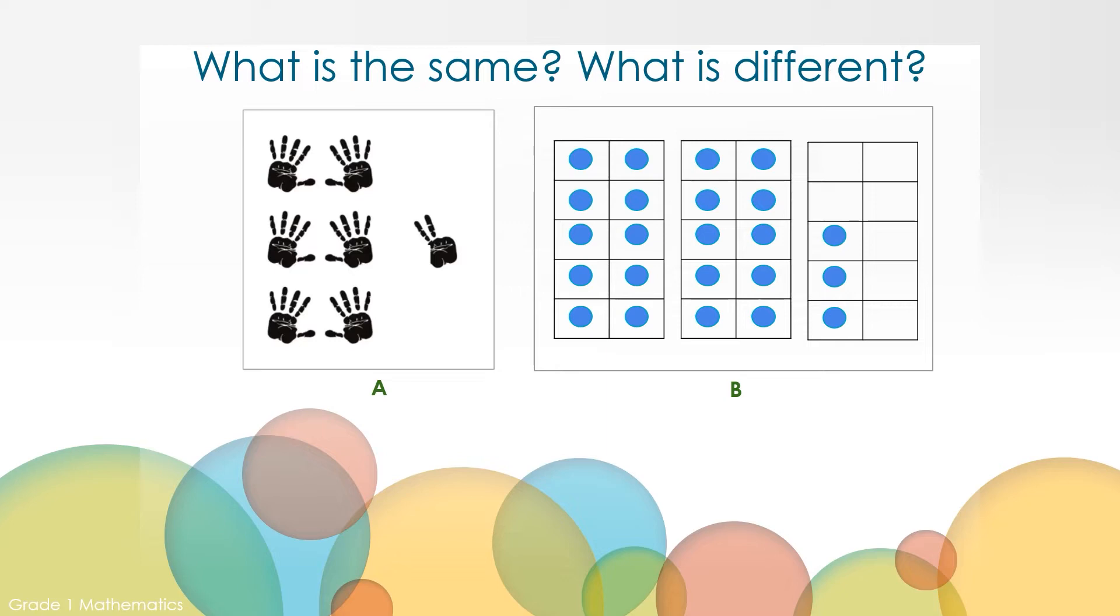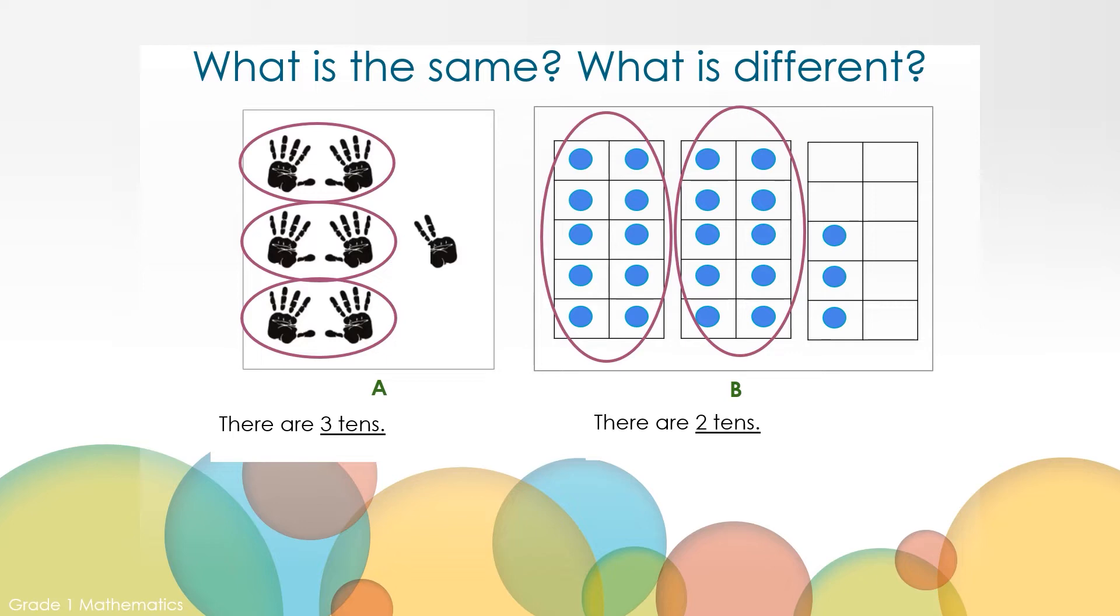With picture A there are three groups of ten fingers. How many groups of ten are in picture B? That's right, there are two groups of ten in picture B. How many ones are in picture B? There are three ones in picture B. A and B are the same because they show two and three but they are different because one has three tens and two ones and the other one has two tens and three ones.